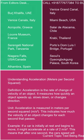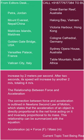If a car is initially at rest and begins to move, it might accelerate at a rate of 2 meters per second squared. This means that after one second, the car's speed will increase by 2 meters per second. After two seconds, its speed will increase by another 2 meters per second, totaling 4 meters per second.